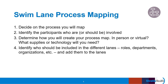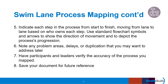Get started — you can revise as you go along and learn more about the process. Indicate each step in the process from start to finish, moving from lane to lane based on who owns each step. Use standard flowchart symbols and arrows to show the direction of movement and to depict the process's progression. Keep adjusting or refining as the team works through the process. Note any problem areas, delays, or duplication that you may want to address later.